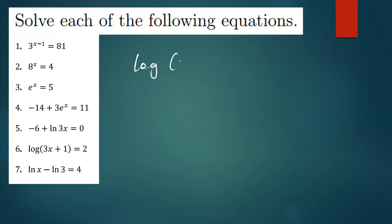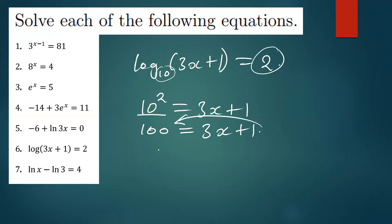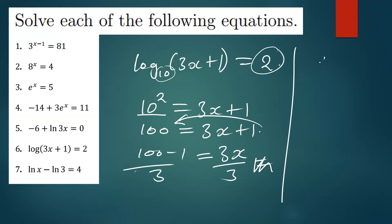The next question is log(3x + 1) = 2. We convert to exponential. A logarithm with no base is base 10, so 10^2 = 3x + 1. 10 squared is 100, so 100 = 3x + 1. Taking 1 to the other side: 99 = 3x. Dividing by 3: x = 33.